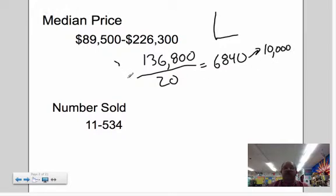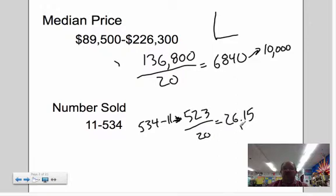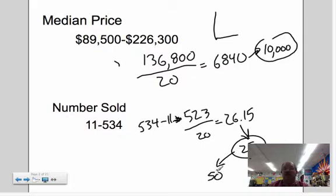For the number sold, we'll do the same sort of deal. 534 minus 11, we'll divide that by 20. I end up with 523, divide by 20 and it comes out to be about 26. So I would probably use 25 and count by 25. Actually, what I end up doing is I'll probably go by 50s because that's a reasonable thing to do, trying to go from 11 to 534.